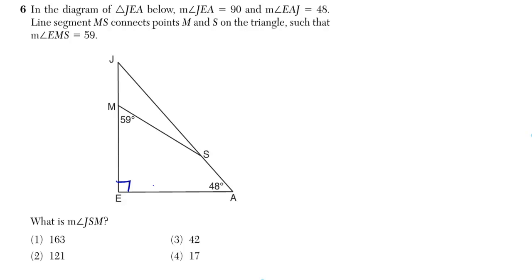Line segment MS connects points M and S on the triangle. Such that the measure... everything here is in the diagram. Why is that there? This is ridiculous. What is the measure of angle JSM?